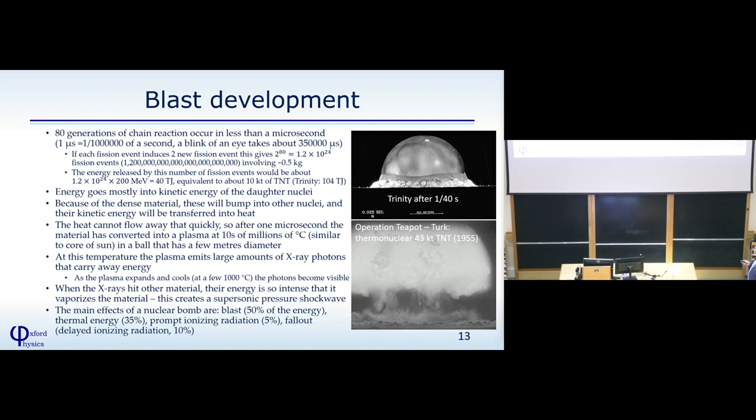Main effects of the nuclear bomb are 50% of the energy go into the blast. 35% into thermal energy. Prompt ionizing radiation, 5%. Delayed ionizing radiation, 10%.